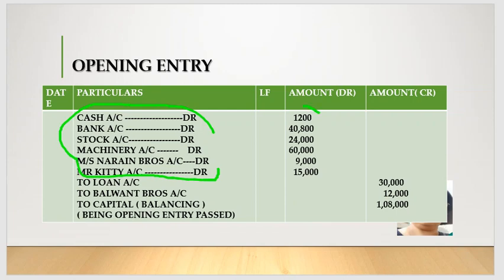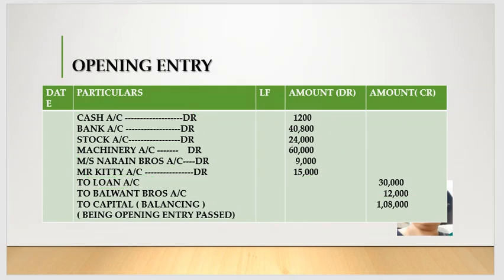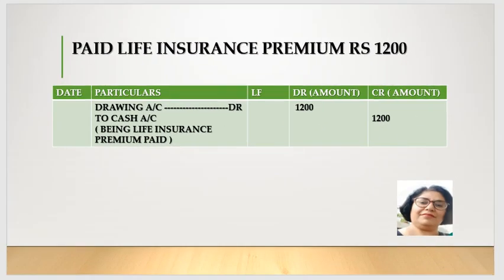We debit cash account, bank account, stock account, machinery account, furniture account, Naren Brothers account, Mr. Kitty account - and add the amounts to the debit column. Then to loan account 30,000 and bills payable 12,000, which are liabilities, and capital account 1,08,000 in the credit column - being opening entry passed. Now we move to the second transaction: life insurance premium. Since the businessman and business are separate entities, the owner's life insurance premium is personal use.